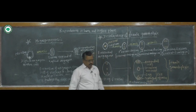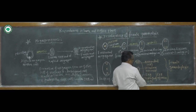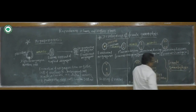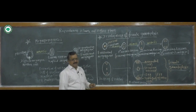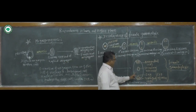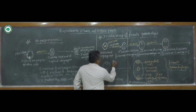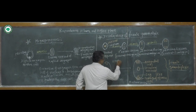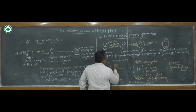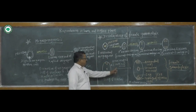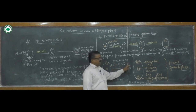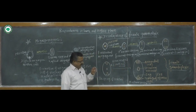The mature embryo sac is now formed. This embryo sac is collectively called the female gametophyte. In this way, the development of female gametophyte takes place. In angiosperm, the embryo sac is eight-nucleated and seven-celled — this is the characteristic feature of angiosperm plants.